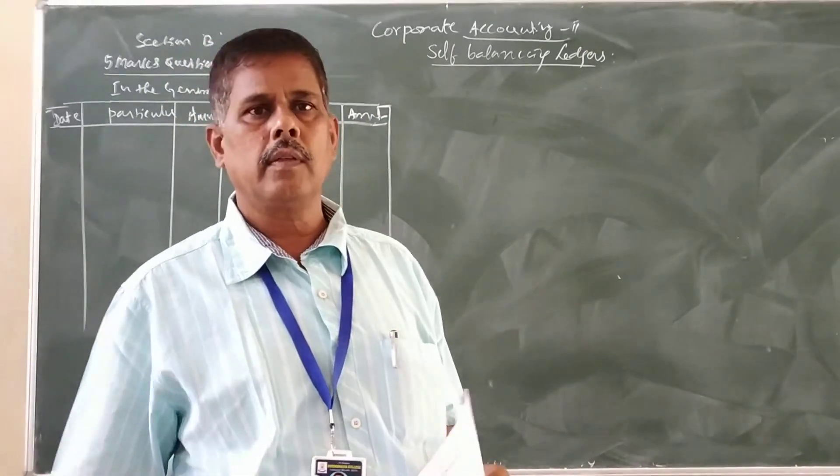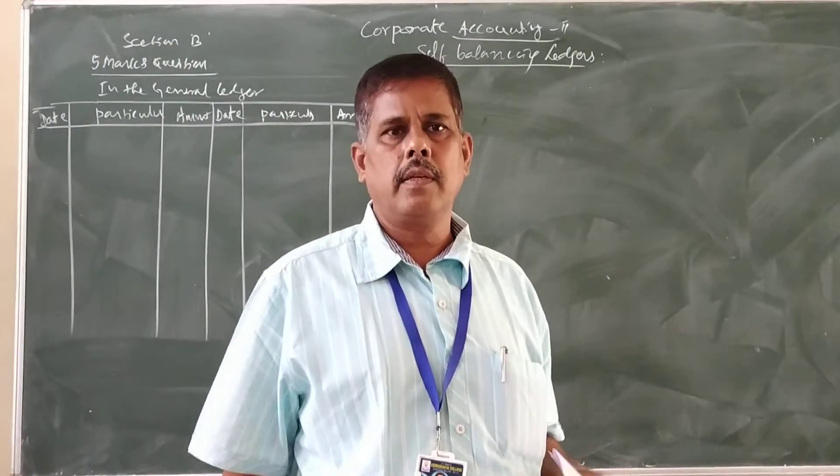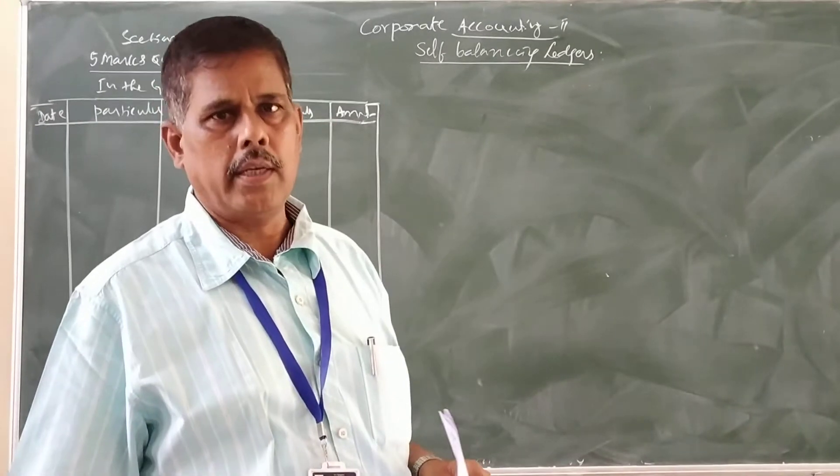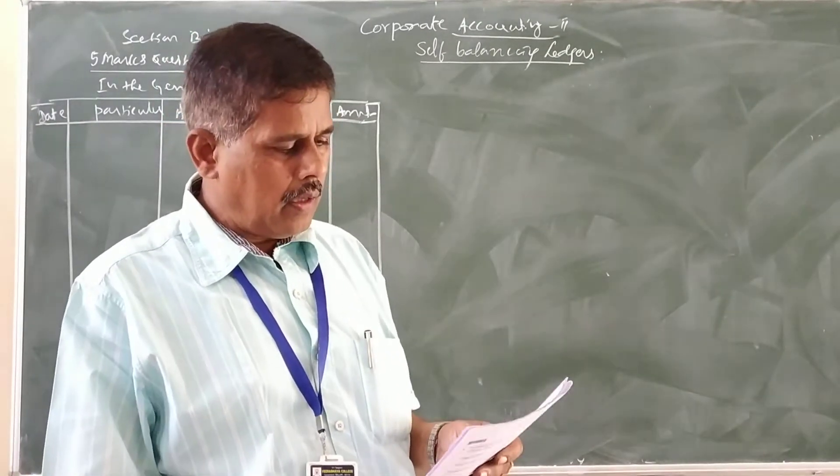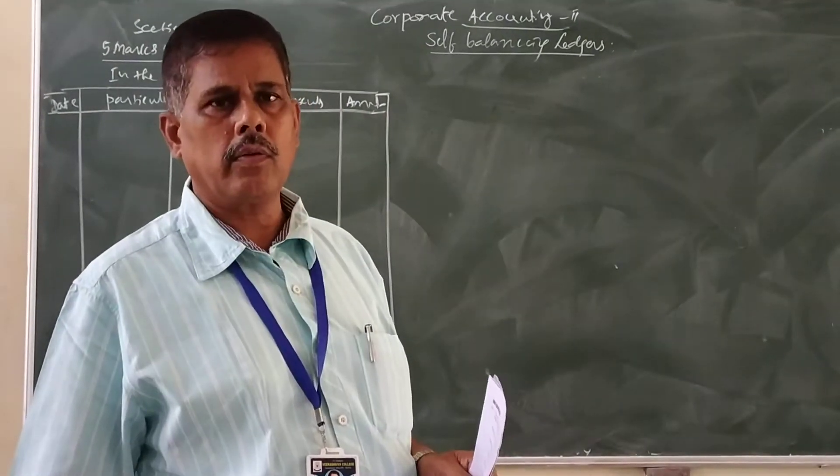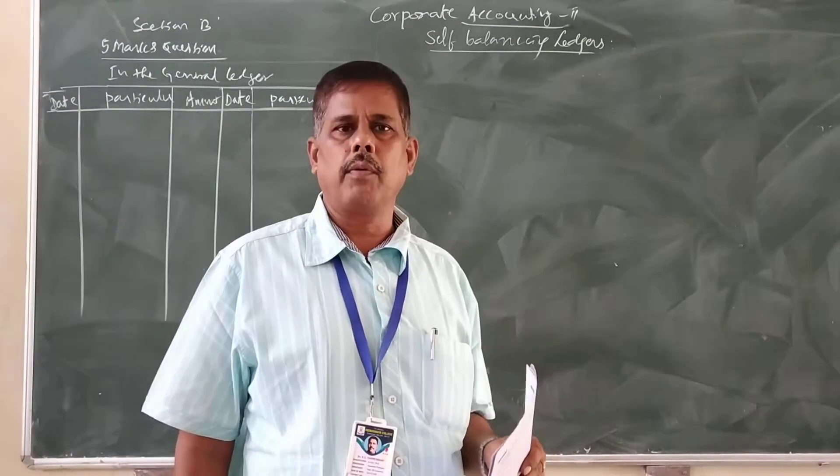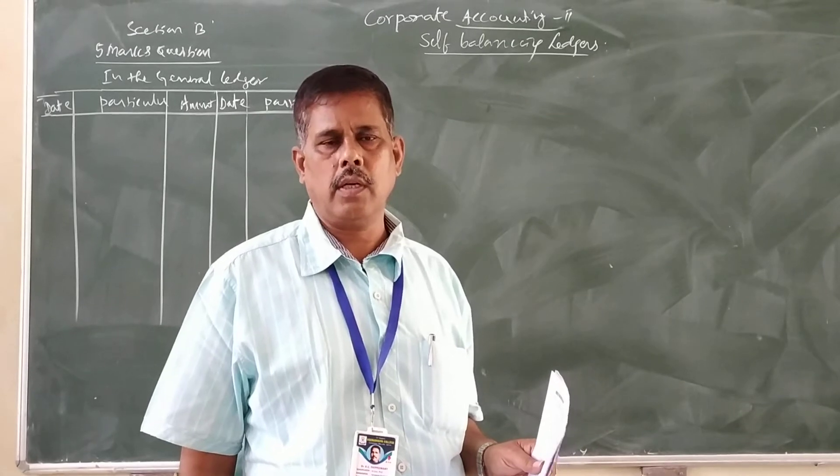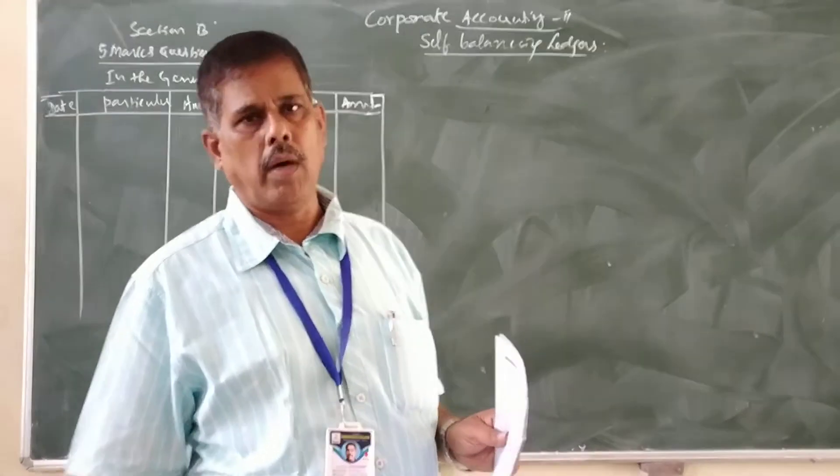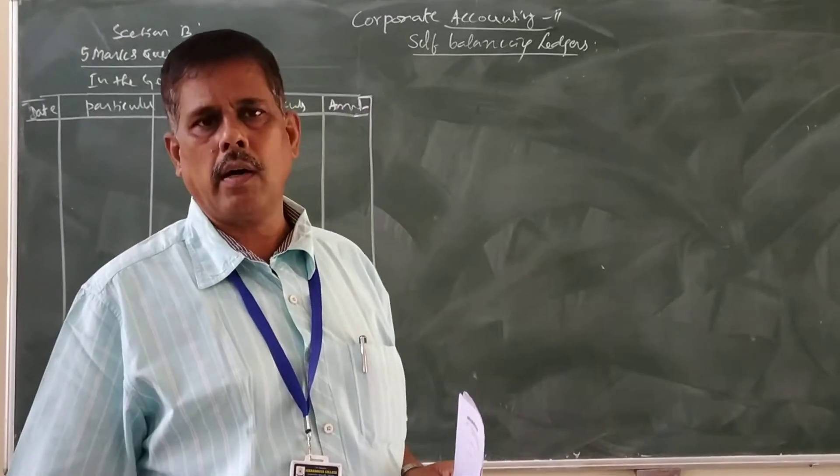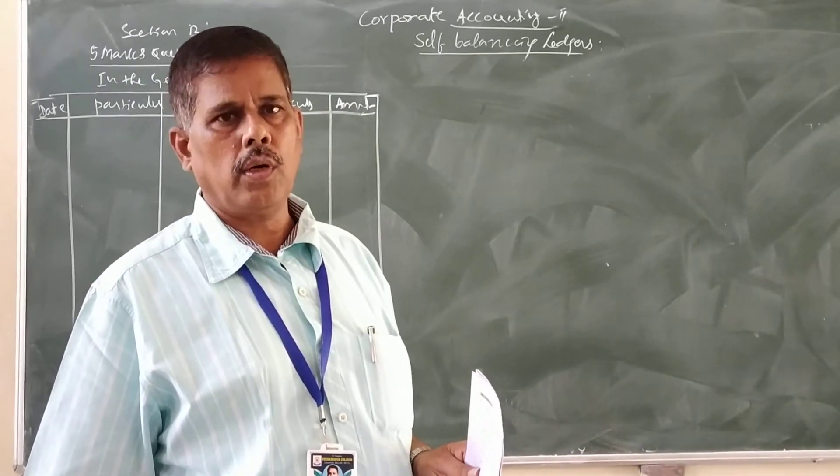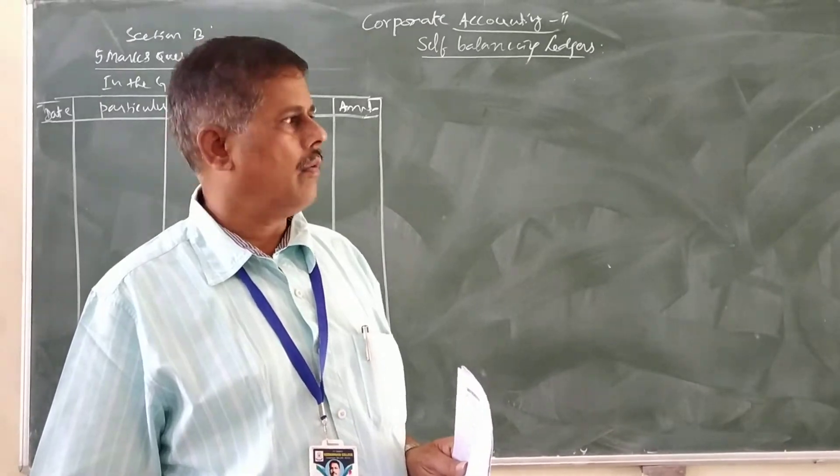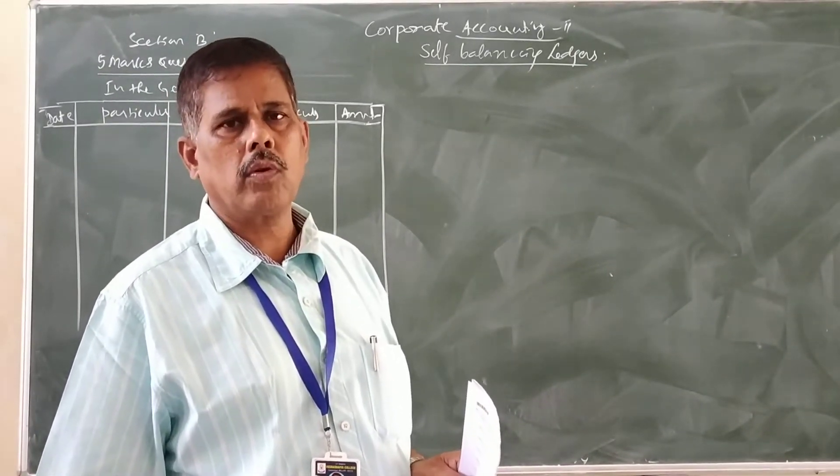Friends, mainly they ask the debtors ledger and creditors ledger how would it appear in the general ledger. Before we solve the problem for 15 marks, how to prepare debtor support and creditors support for 5 marks. In this chapter they sometimes ask total 22 marks: 2 marks for 1 question, 1 question for 5 marks and 1 question for 15 marks.